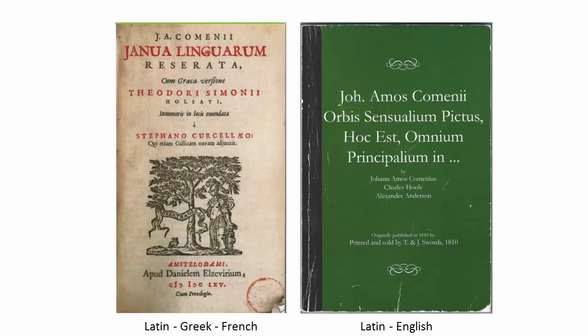Comenius wrote several Latin textbooks that were enormously popular across Europe for several centuries, in particular the Janua Linguarum Reserata — that is, the gateway to languages opened — and the Orbis Sensualium Pictus, the world of perceptible things illustrated. The purpose of these two books was to teach young students about the world itself and to name the objects of this world in the students' native language and in Latin.